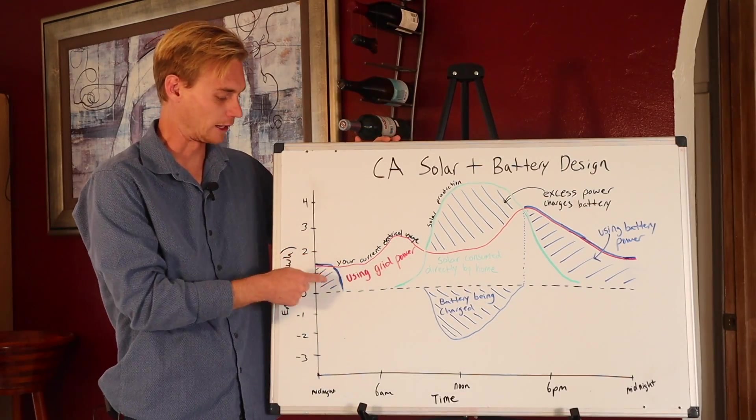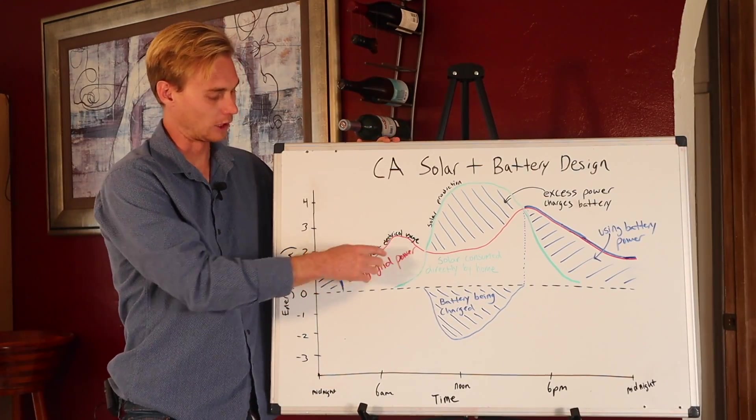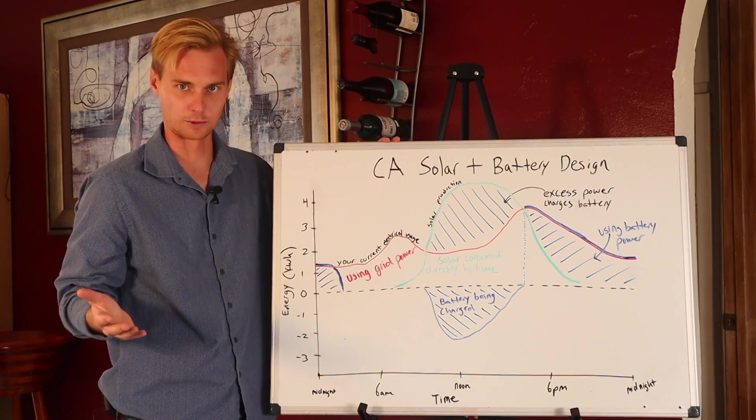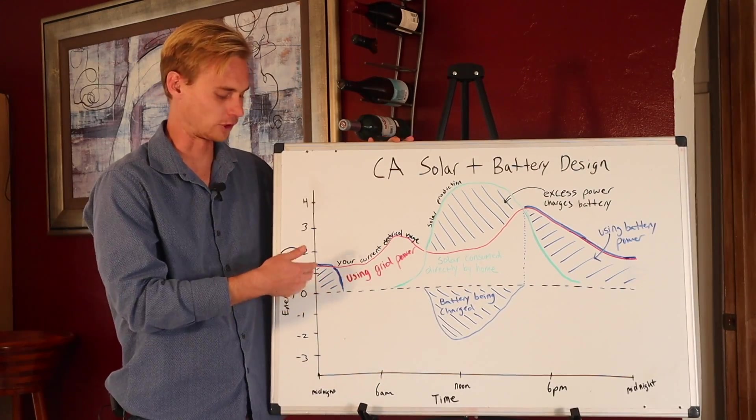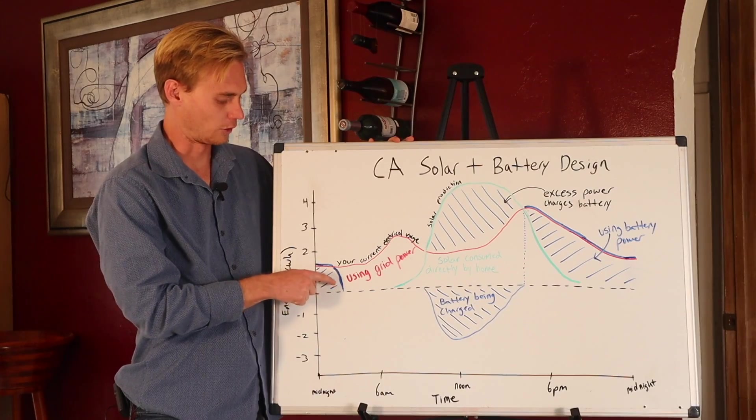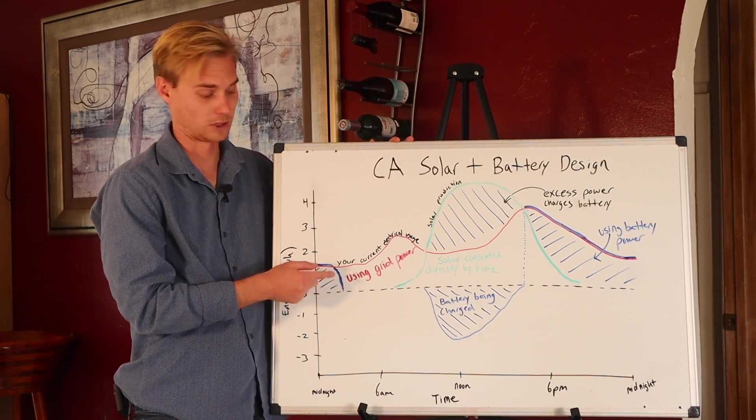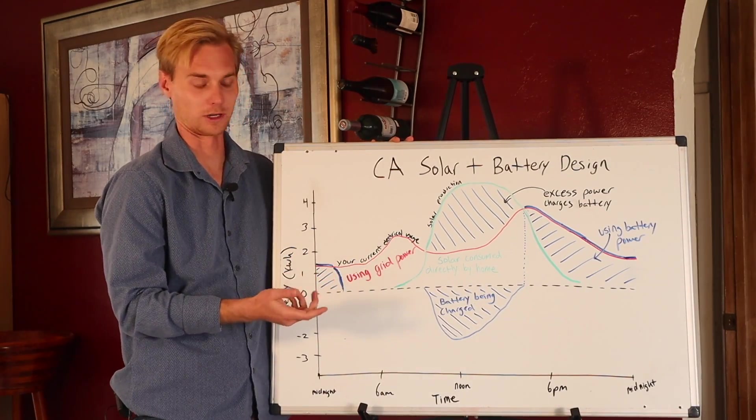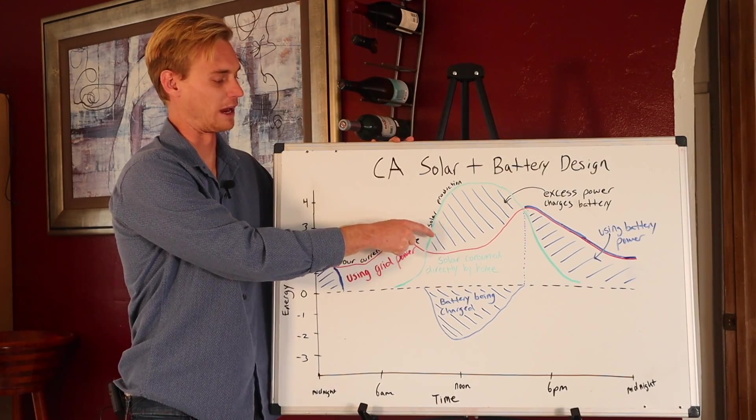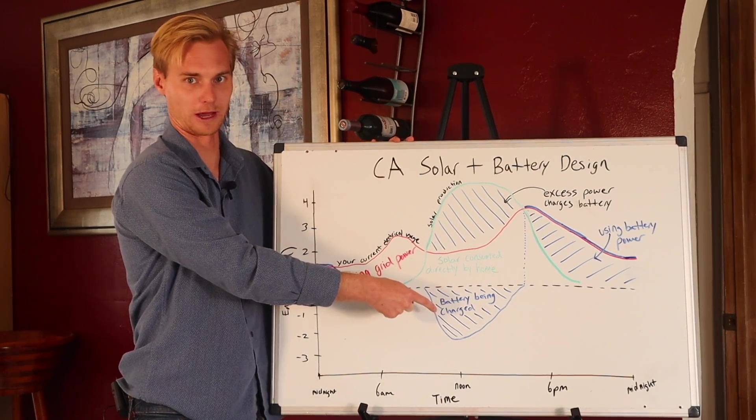So in this example, I actually left a time probably 2am or so, sometime in the middle of the night here, the battery is going to essentially die. And you're going to be on grid power again, until we get to the point in the daytime where we have excess again to charge the battery.